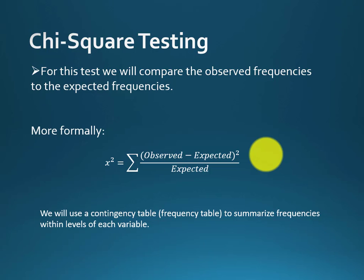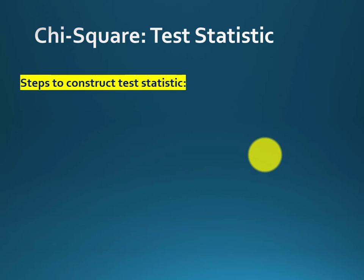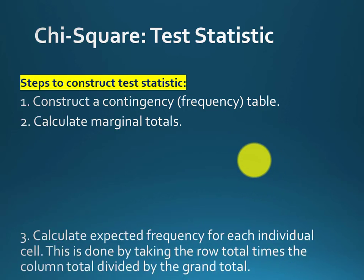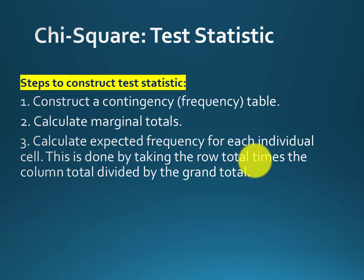We use a contingency table or frequency table to summarize frequency within the level of each variable. There are steps if you want to conduct a chi-square test manually by hand — you can also use SPSS or Excel. The steps are: make a contingency frequency table, calculate the marginal totals, calculate the expected frequency using the formula, and finally calculate the test statistics value.